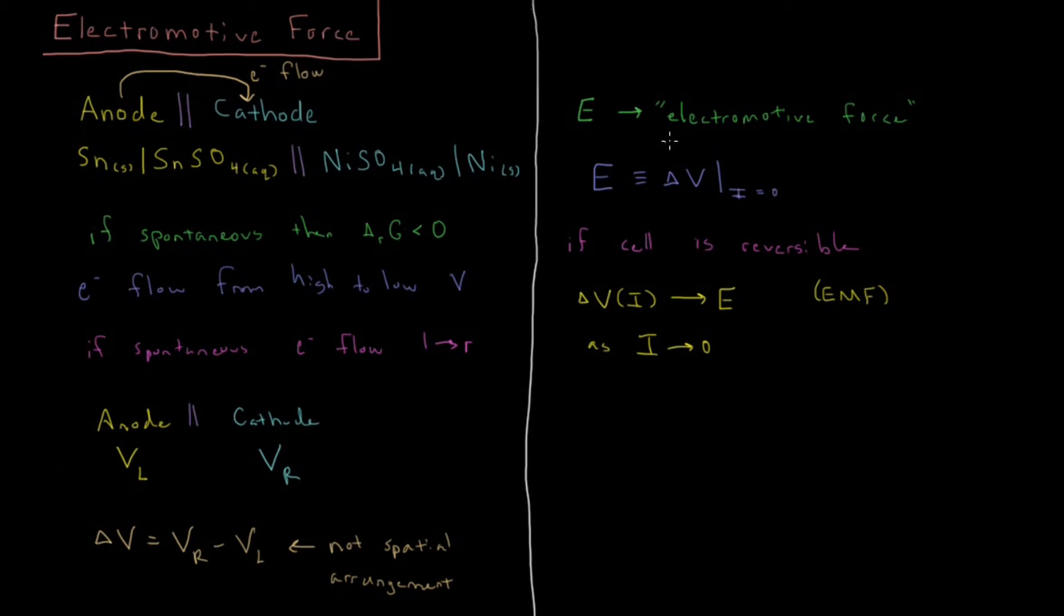Okay, so our EMF, our electromotive force here, is going to be the criterion for spontaneity in these types of electrochemical cells. So what we want to note here is that for our EMF, E greater than zero is going to be a spontaneous reaction. It's going to flow from left to right spontaneously.